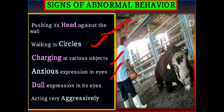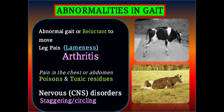Activity and aggressively aggressive behavior may be due to stress. Abnormalities detected in gait during ante-mortem inspection include reluctance to move, which may be due to laminitis or leg pain, arthritis or inflammation of the joints, pain in the chest or abdomen due to poisons and toxic residues, and nervous disorders such as staggering or circling. Medial patellar desmotomy is a procedure used to correct abnormal ligament displacement.